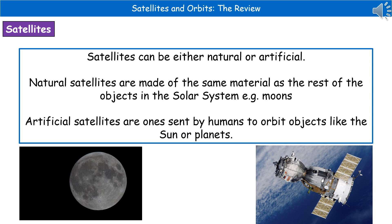If we think about the artificial satellites, like the bottom right there, these are the ones that have been sent up into space by humans to orbit objects like the sun or planets — obviously very different from the natural satellite on the left.